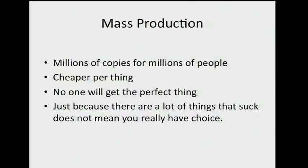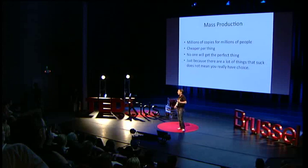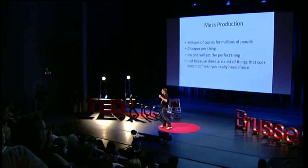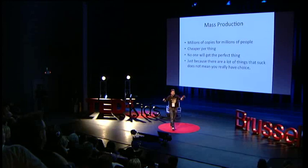So what is mass production? Millions of copies for millions of people. We're all unique and we're all individuals — and we tell kids this — but what do we do most of our lives? We buy identical things. We make things with millions of copies. Virtually everything you own has a million cousins that look exactly alike. And what we're basically doing is building a mediocre world — a world where, per definition, everything sucks, because everything is made for a million people.